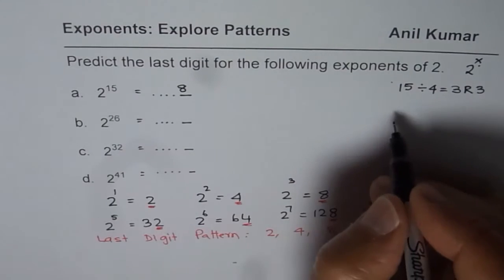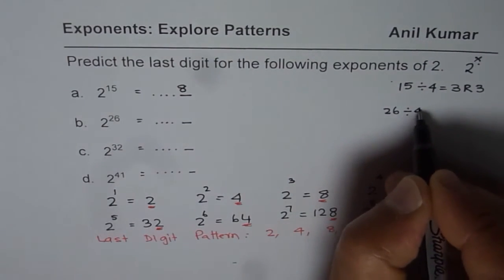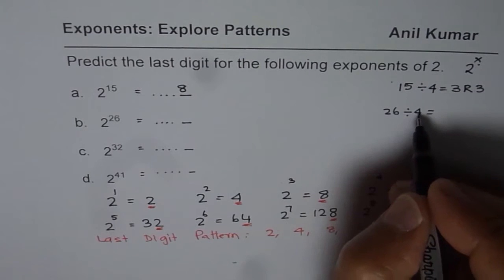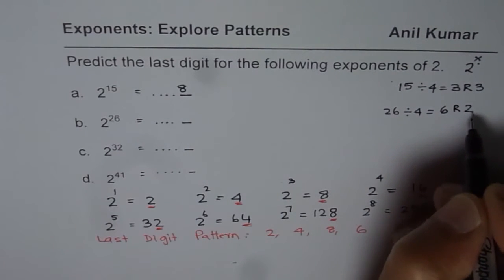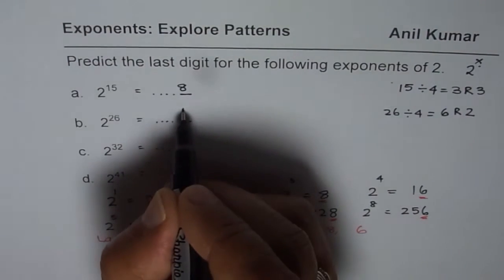Now let's divide 26 by 4. If I divide 26 by 4, 4 times 6 is 24, remainder is 2. Since the remainder is 2, we get 4 as the last place.